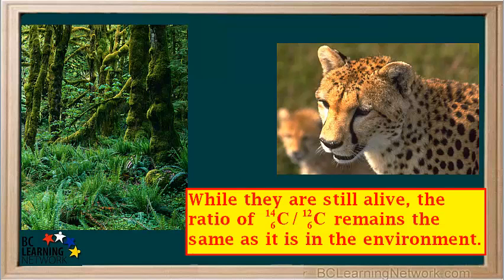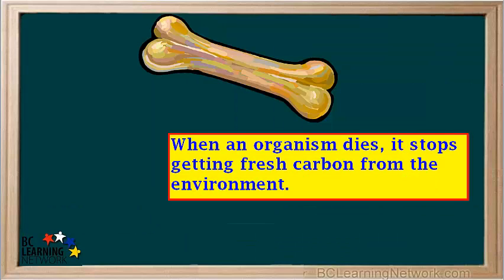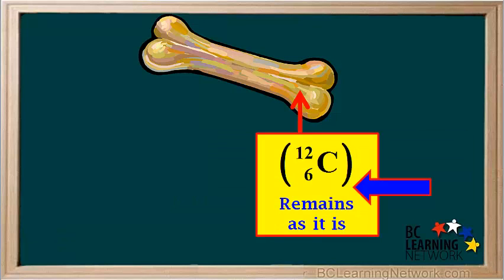So while they're still alive, the ratio of carbon-14 to carbon-12 in their bodies remains the same as it is in the environment. When an organism dies, it stops getting fresh carbon from the environment. Carbon-12 is a stable isotope, so if a dead artifact is preserved, the amount of carbon-12 in it remains the same as it gets older.